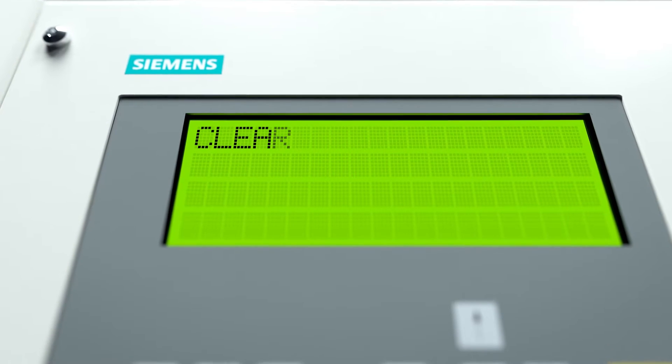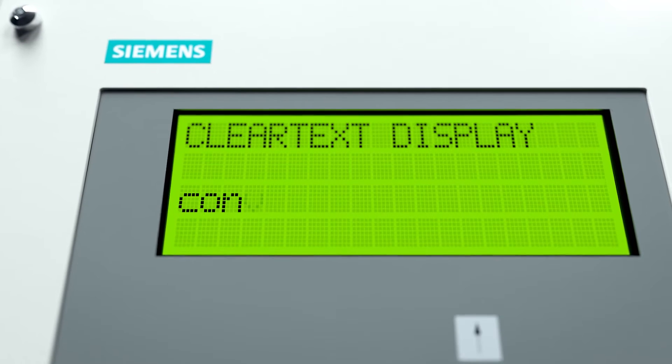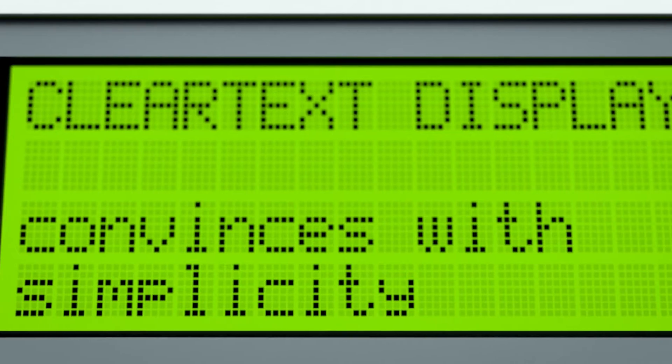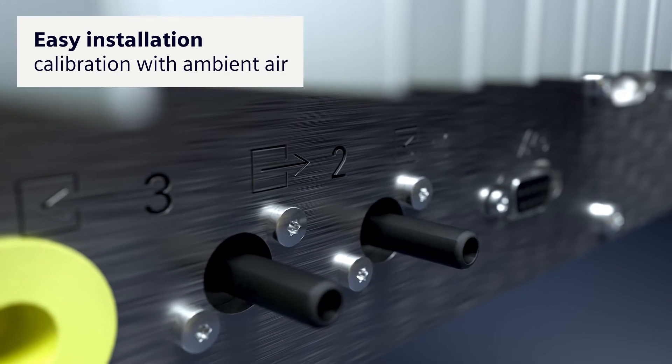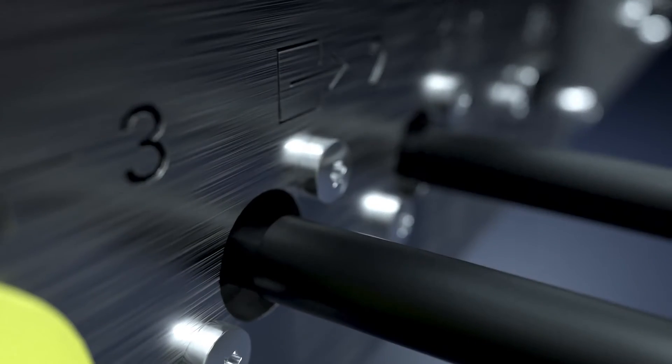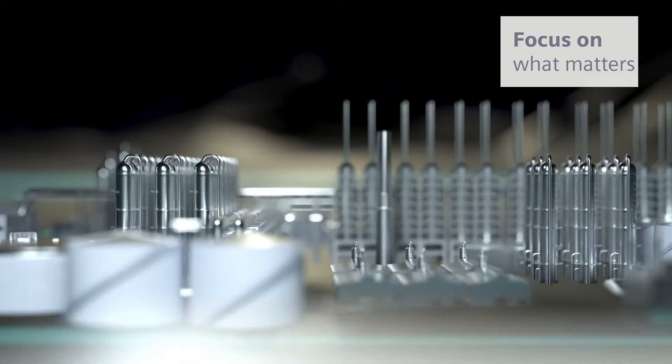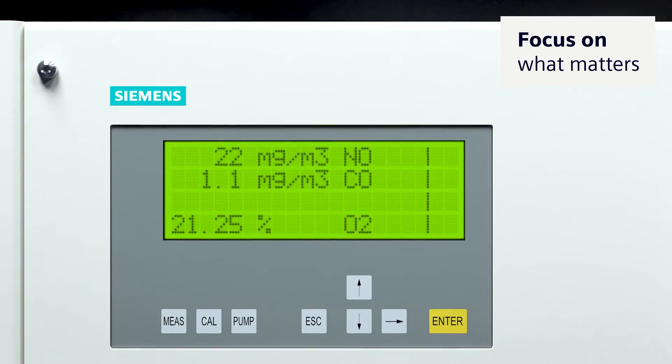You don't have to be a specialist to run the device. The Ultramat 23 convinces with simplicity. It's easy to install, and there are no calibration gases needed. You can just focus on what matters to you, the measured components and concentrations.